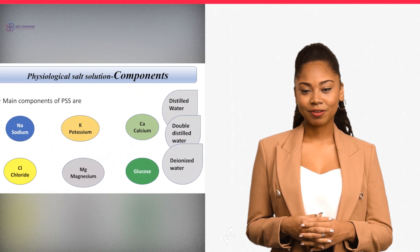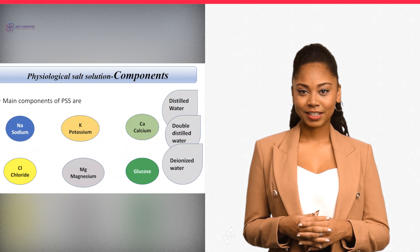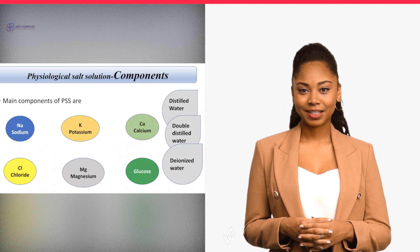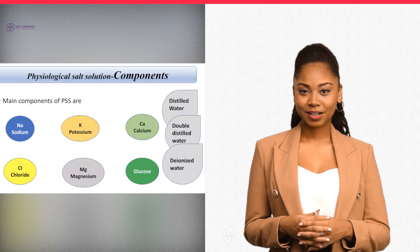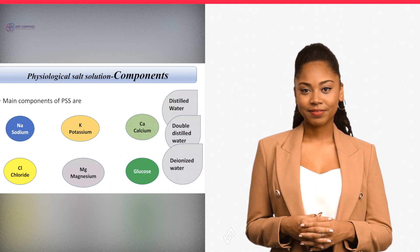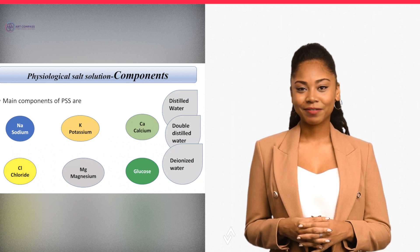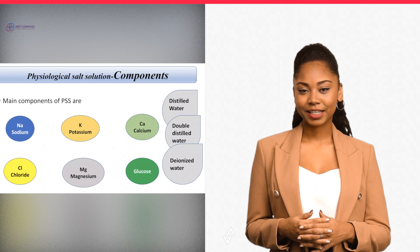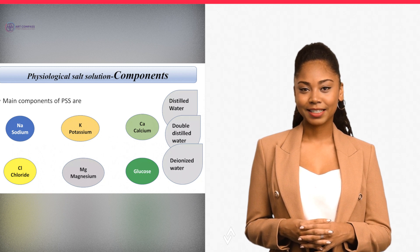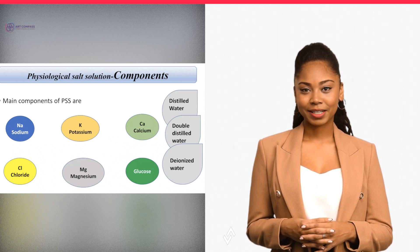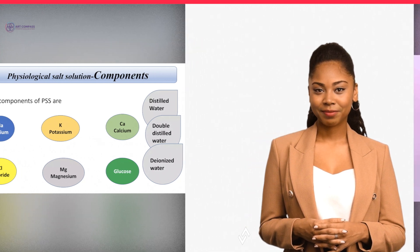Cell culture buffers have a long-running history that began in the early 1900s. Basic salt solutions like Ringer's and Tyrode's were initially used, but they proved inadequate for sustaining cell growth and survival. In the 1940s, Earle's balanced salt solution was developed, with a complex combination of salts, amino acids, vitamins, and glucose to more accurately reflect the cell's environment in vivo.